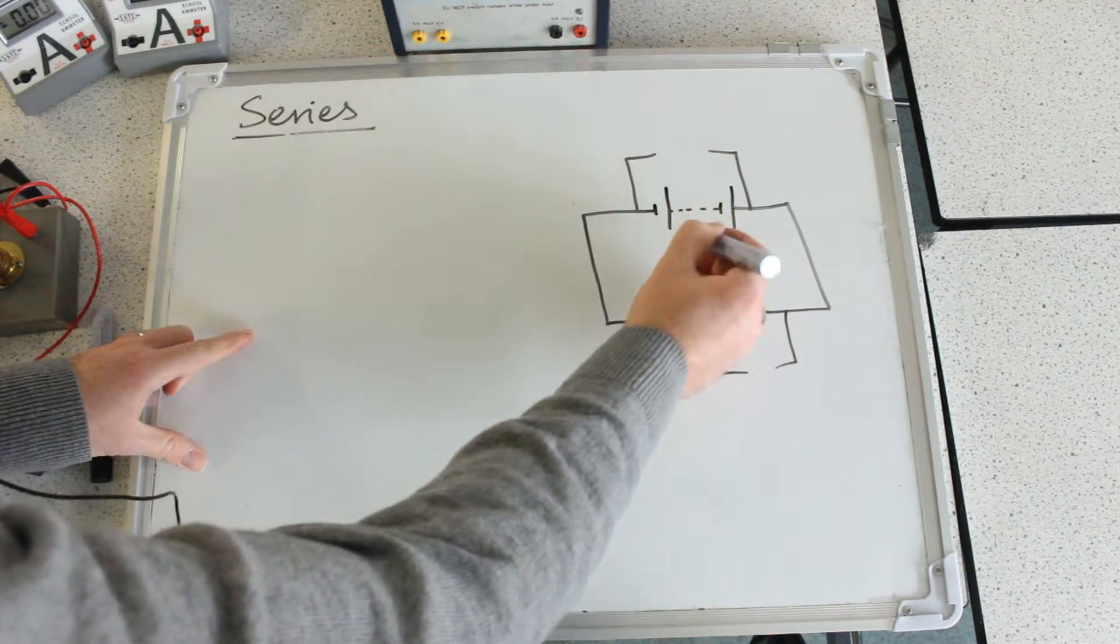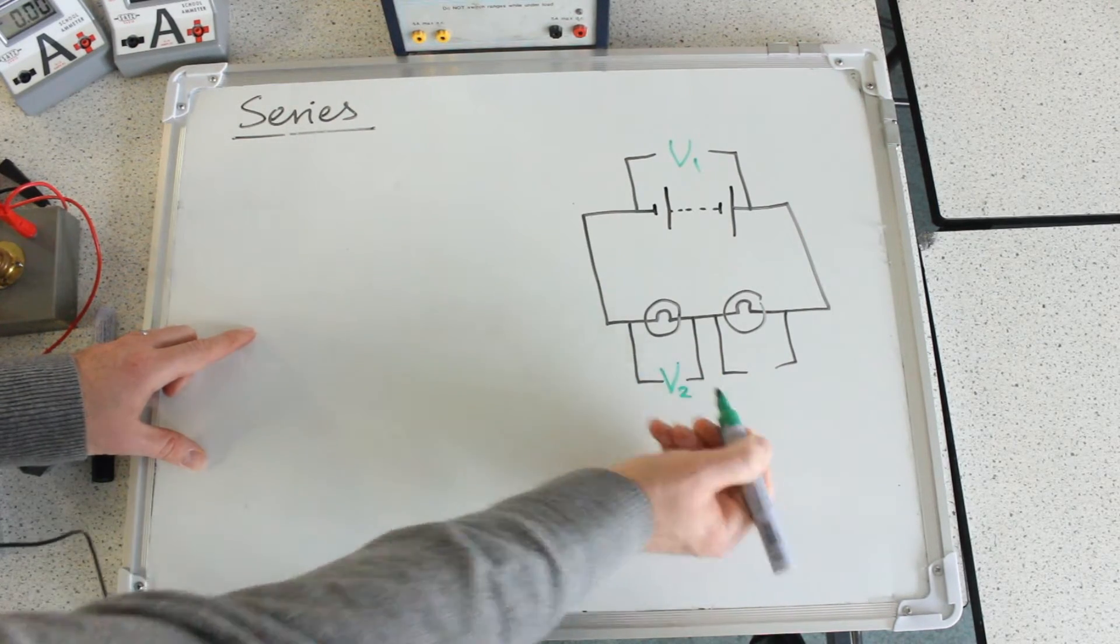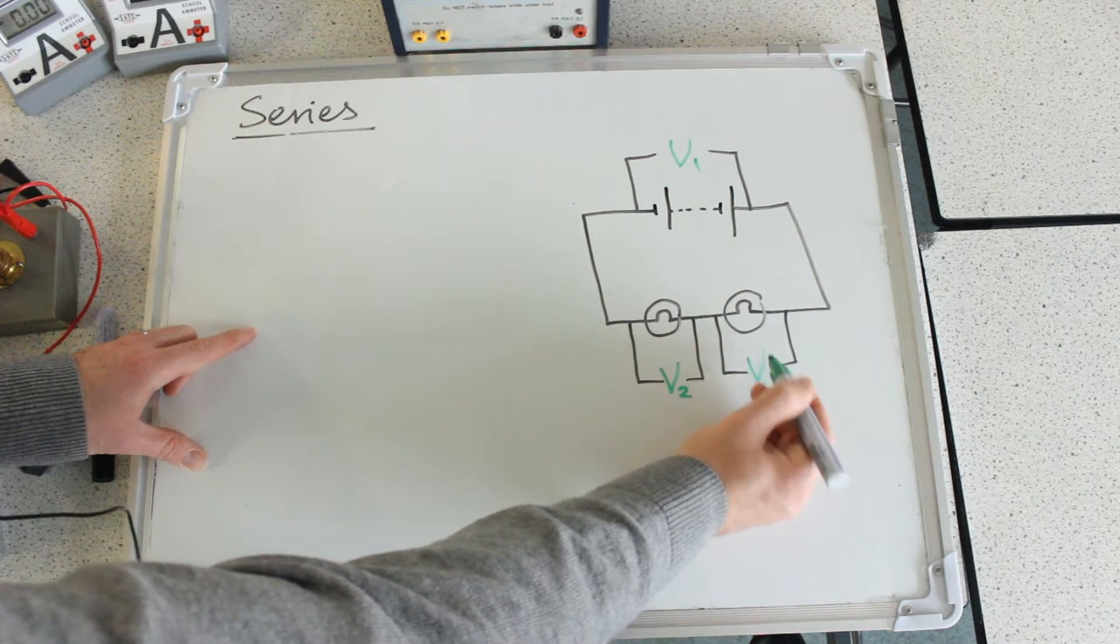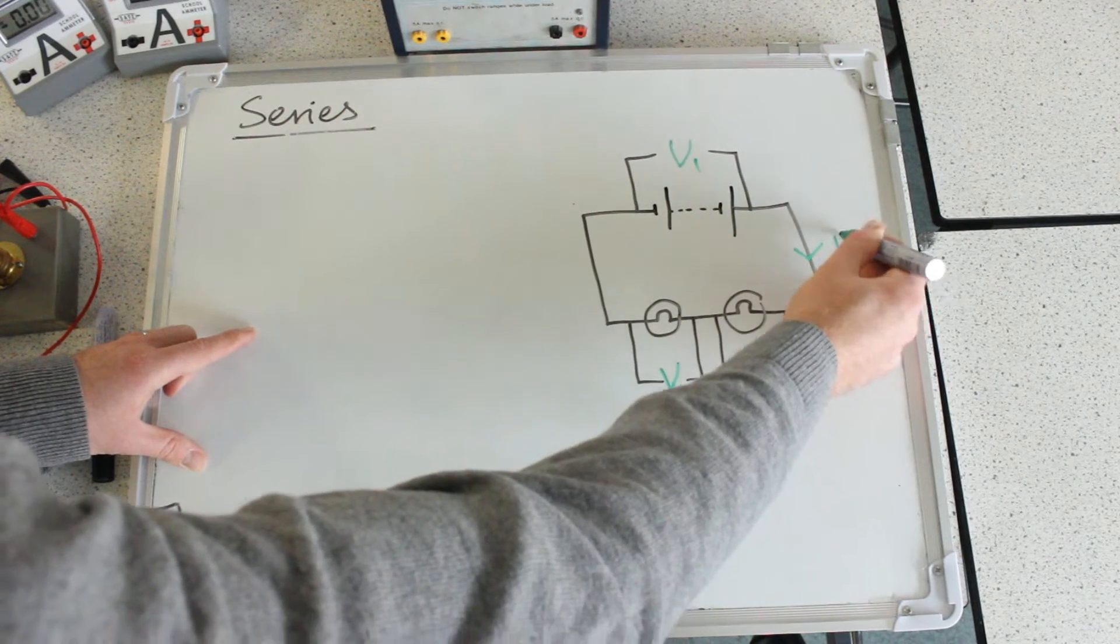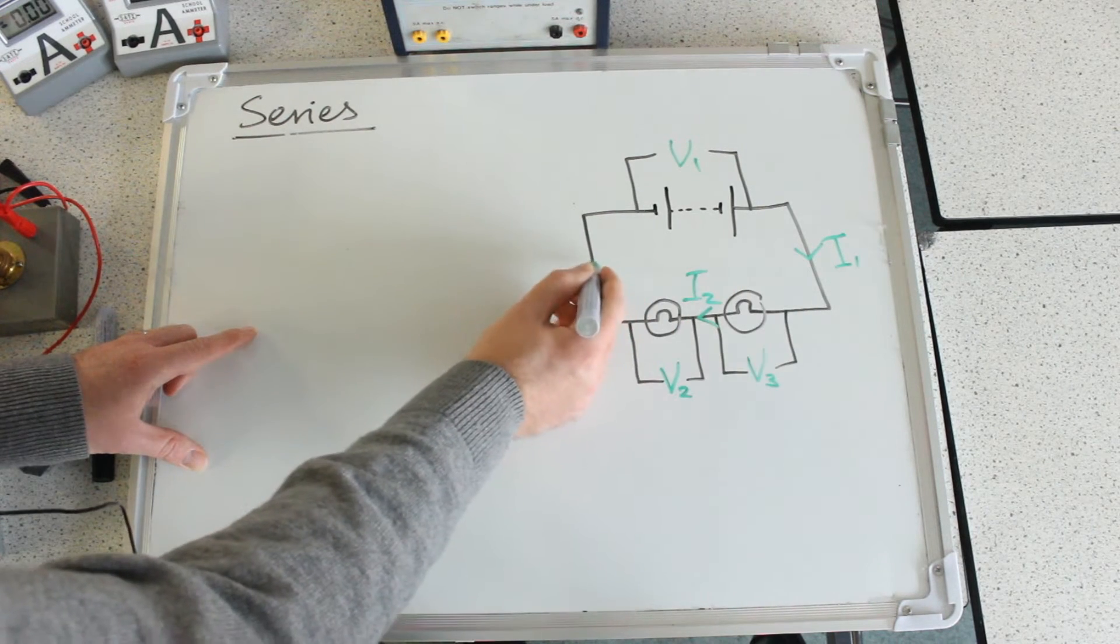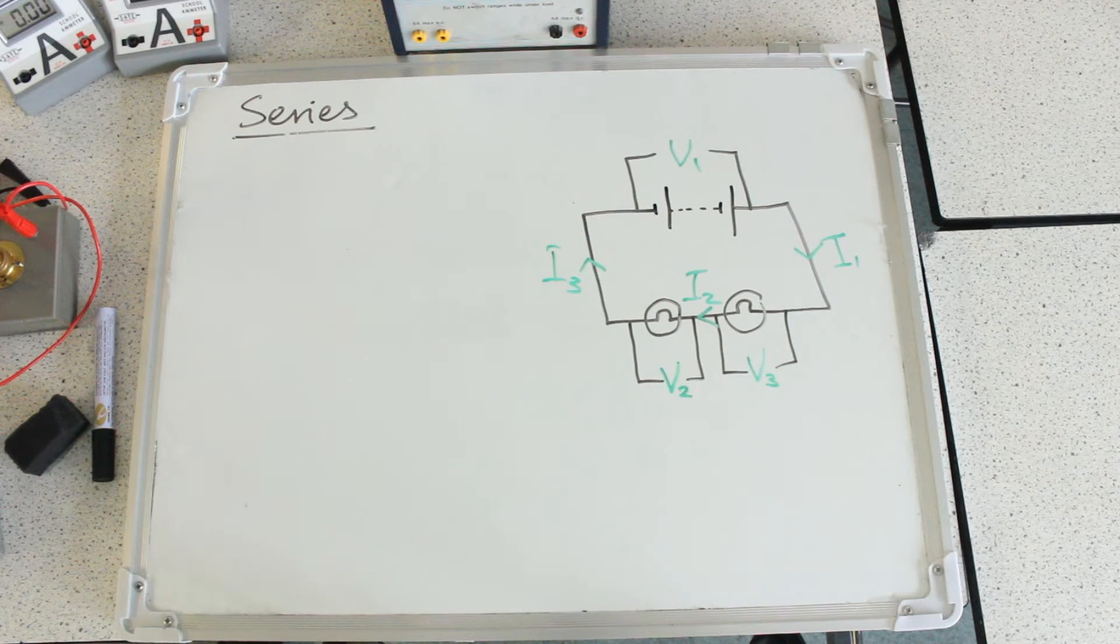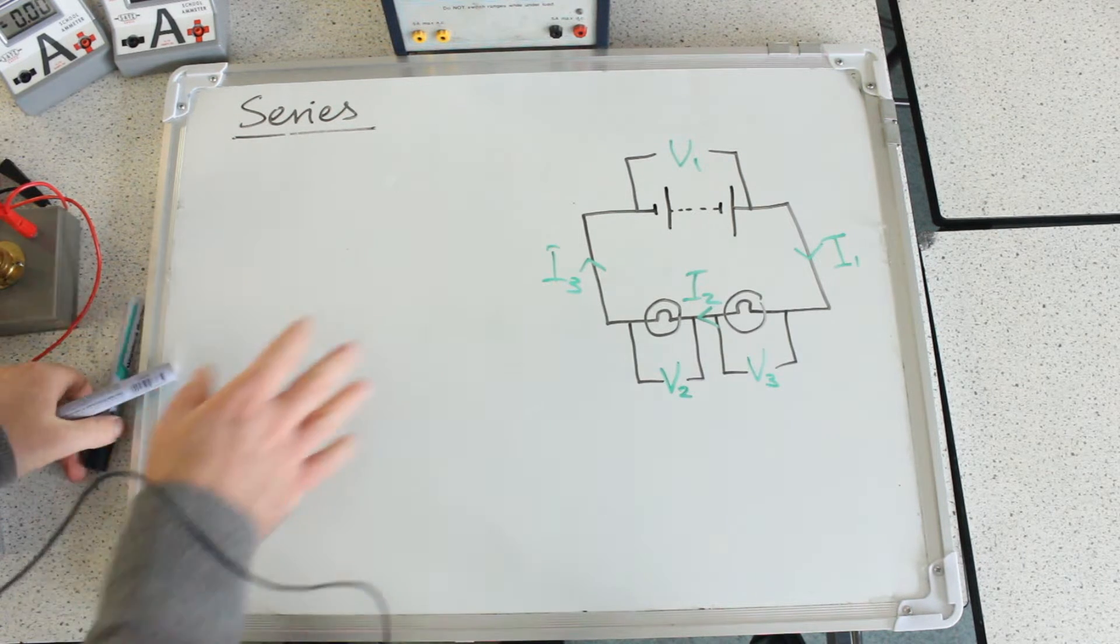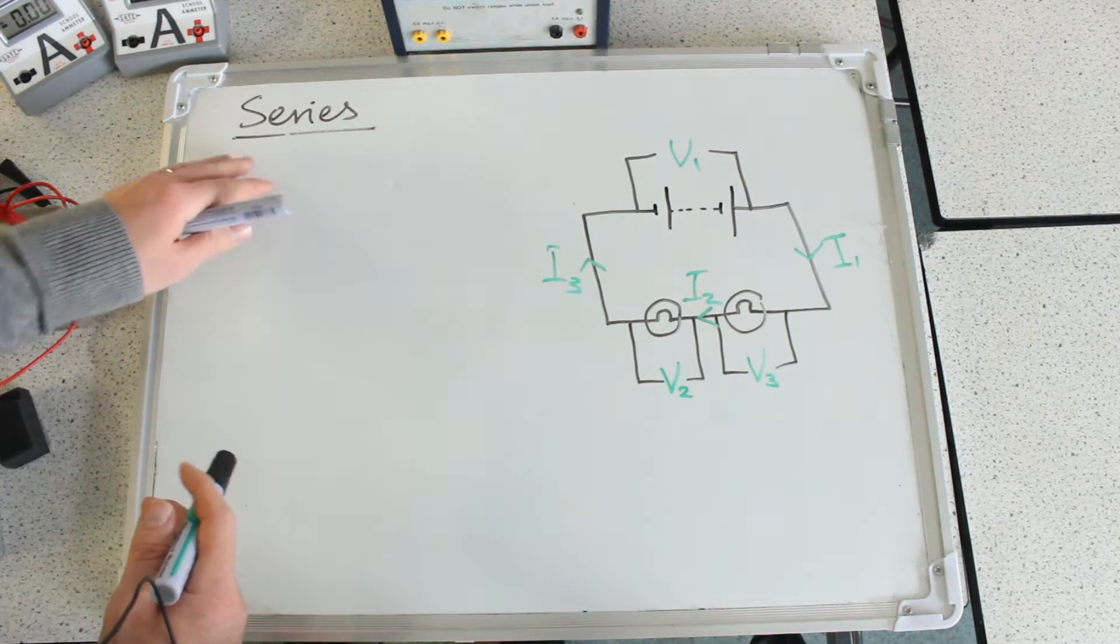So this I'm going to call V1, that's the supply voltage. This I'm going to call V2, that's the voltage for the energy per unit charge used up by this bulb. I'm going to call this V3, and then the currents I'm going to put on here: I'm going to call this one I1, this one in the middle here I2, and this one I3. So think back to the practical that we did, and that practical shows these two laws.